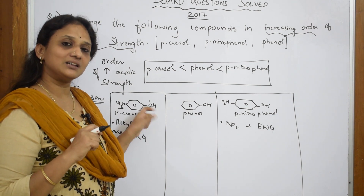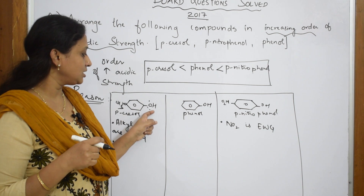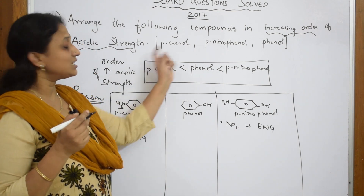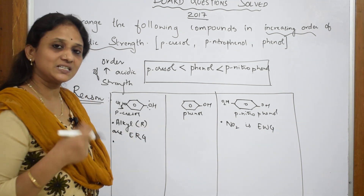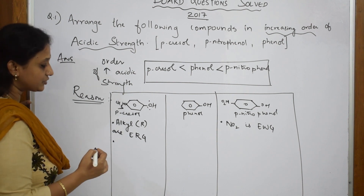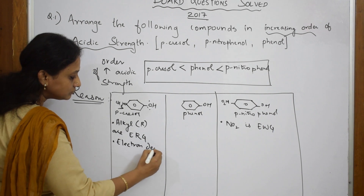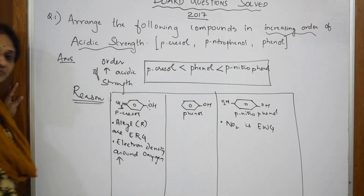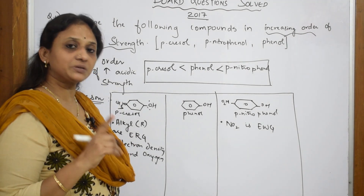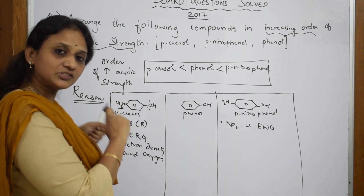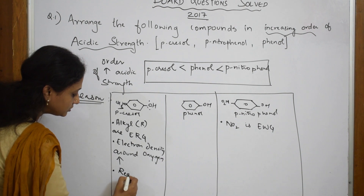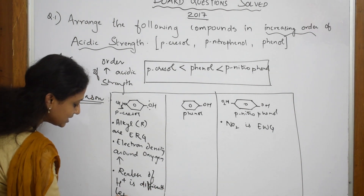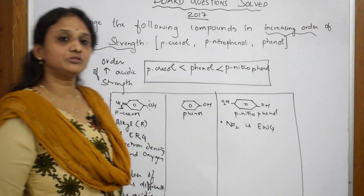When the methyl group donates electrons, the electron density shifts through the ring and a large electron cloud is created around oxygen. The pi electrons combined with the alkyl group's electron-donating nature create a big electron cloud around oxygen. When this electron cloud is large, oxygen has no need to drag the H+ — so release of H+ becomes very difficult. Alkyl is an electron-releasing group → electron density around oxygen increases → release of H+ is difficult → less acidic.